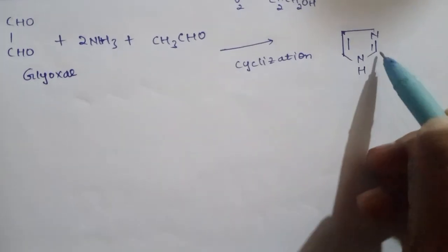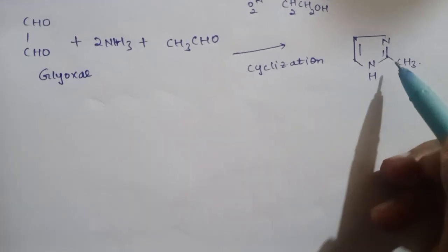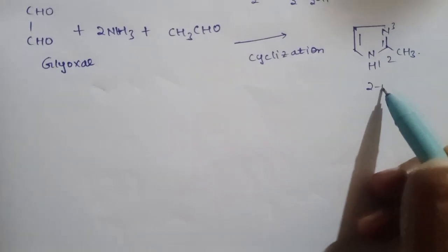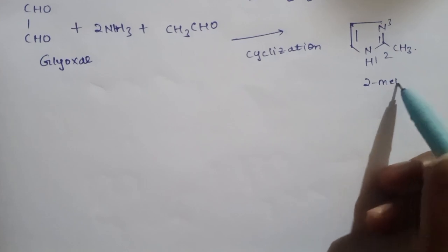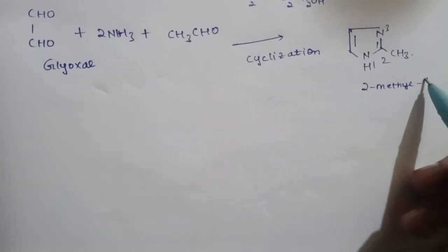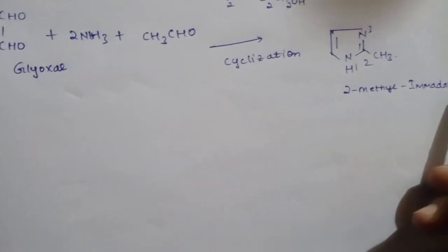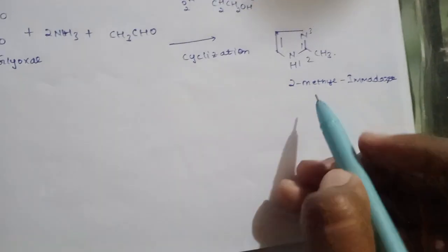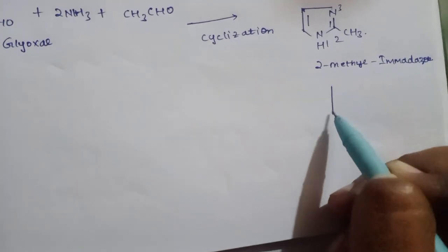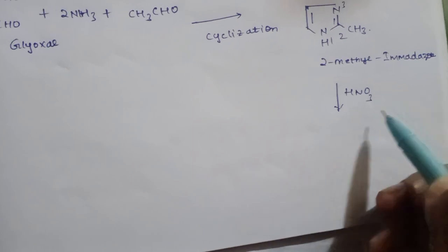After cyclization, with the methyl group at position 2, the numbering gives us 2-methylimidazole. This compound then undergoes nitration.